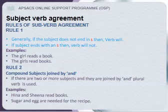Rule two — compound subjects joined by and: if there are two or more subjects joined by and, a plural verb is used. Examples: Hina and Sheena read books. Sugar and egg are needed for the recipe.